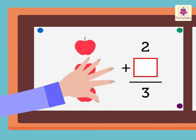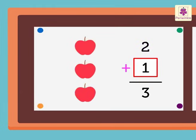How many apples do you see now? One apple. Thus, the missing addend is one. Two plus one is equal to three.